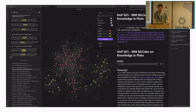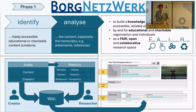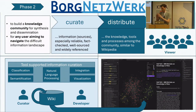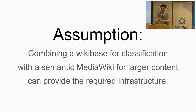We need to scale this. I think in this room are many people who would say, yeah, I could do this in Semantic Media Wiki. So yes, my assumption: we can identify reliable content to highlight valuable information sources in an accessible knowledge infrastructure. Now we go to the complicated part — and I said I will skip over most of this. But for anybody whose attention I caught, and who is interested in these detailed slides, feel free to contact me. Everything is on the site. I'll stick to: we have some presentation layer and some database layer. The assumption is that combining a Wikibase for classification with Semantic Media Wiki for larger content can provide the required infrastructure. Think of this as something like Wikidata plus Wikisource — structured data and larger content in a MediaWiki. You are in the room to tell me if this makes sense or doesn't make sense.